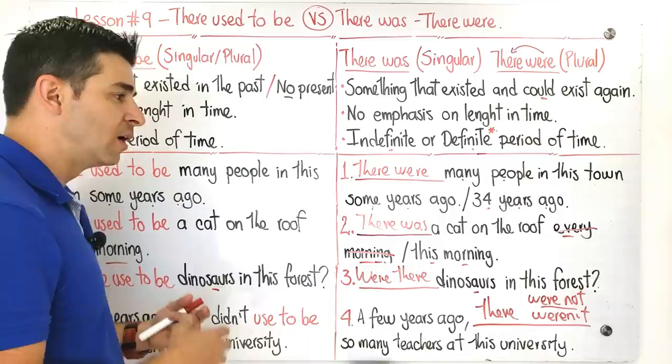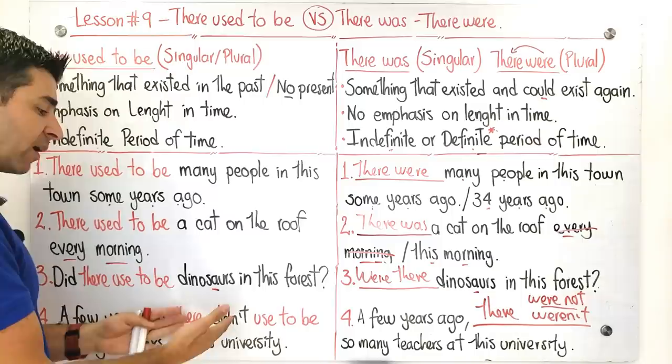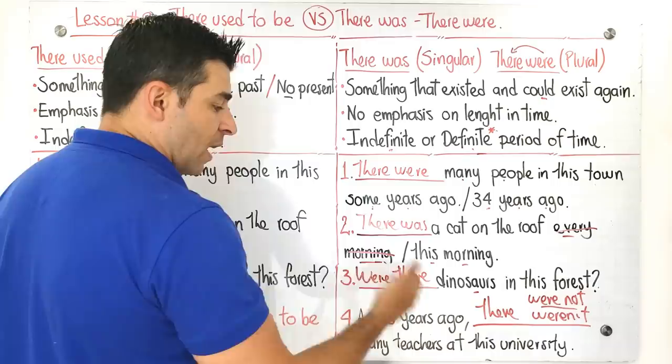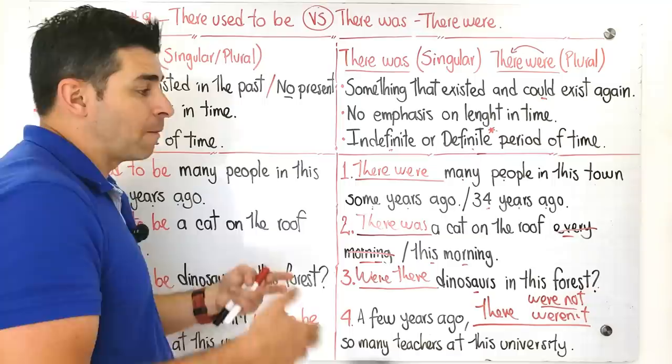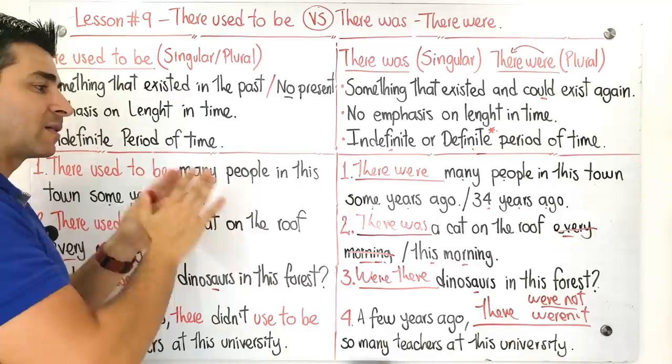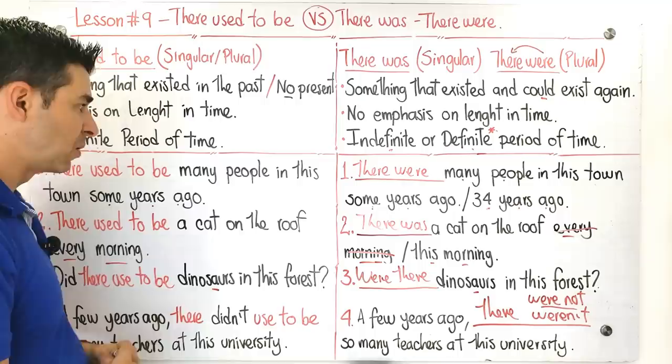Guys, both options are correct. It depends on the context. So there could be both adapted, it depends on the intention as such. Here we're talking about a long time ago, you see, it's not that there were so many teachers, there didn't used to be so many teachers as there are now. And we're talking about that small difference. And here we're talking about a few years ago, there weren't so many teachers at the university. They seem very, very similar, but here we're making the emphasis on time, here something that existed in the past and could exist, and here something that existed in the past and is no longer there. So basically, it's for you to analyze these sentences.